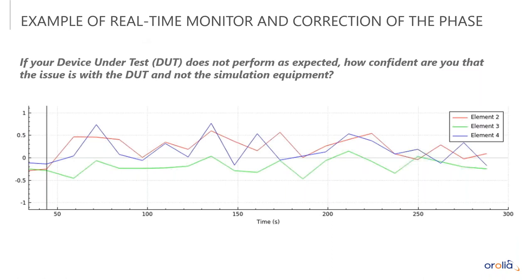This is an example of the real-time monitor and correction of the phase. In this four-element system, element one is not shown because it's the reference we're comparing each other element to. From this chart you can see the relative accuracy between all elements — all of them versus element one — and you can compare them to each other. This is a screenshot of the simulator giving you this information in real time for as many elements as are supported in your system.